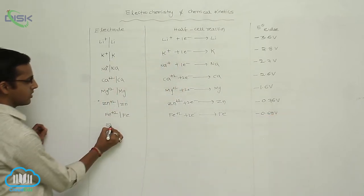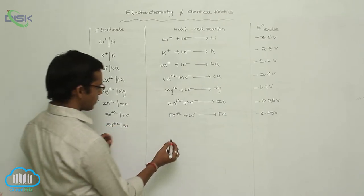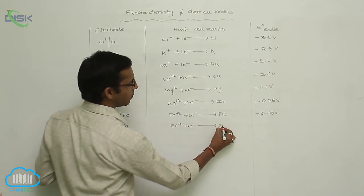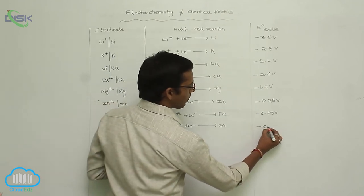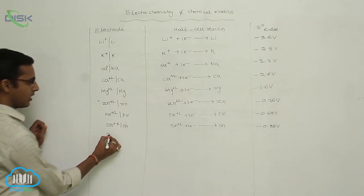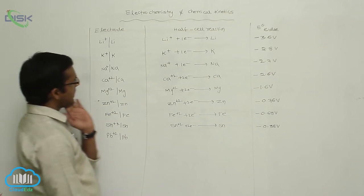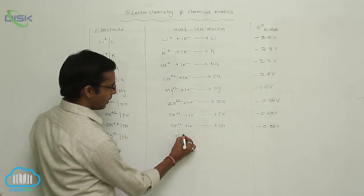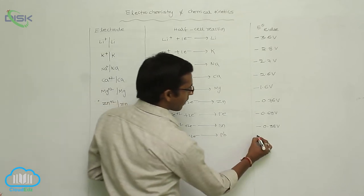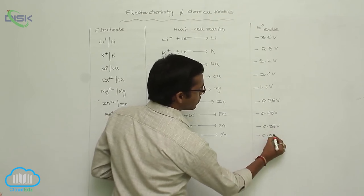Next is tin: Sn²⁺ | Sn. Sn²⁺ gains two electrons and is converted to tin metal. Its E° value is −0.38 V. Next is lead: Pb²⁺ | Pb. The half-cell reaction is Pb²⁺ gaining two electrons converted to Pb. Its E° value is −0.08 V.